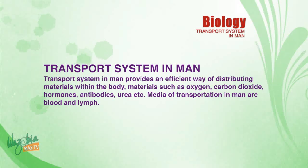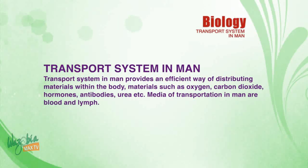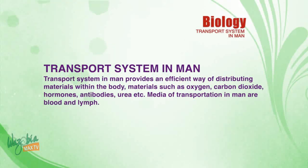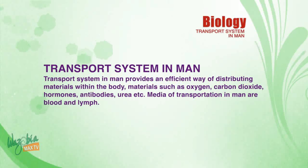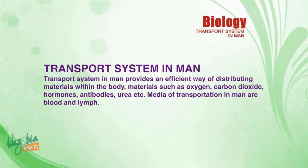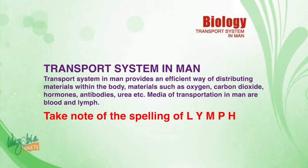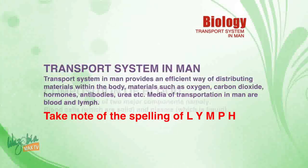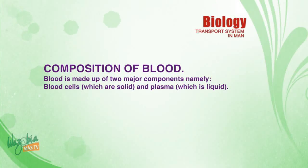Now let's enjoy the lesson together. Transport system in man provides an efficient way of distributing materials within the body — materials such as oxygen, carbon dioxide, hormones, antibodies, urea, and so on. The media of transportation in man are blood and lymph. Take note of the spelling of lymph: L-Y-M-P-H.